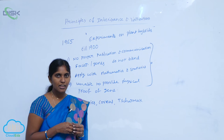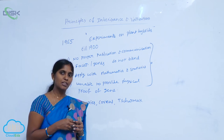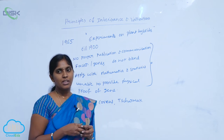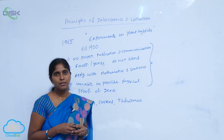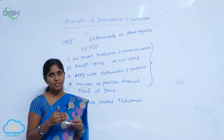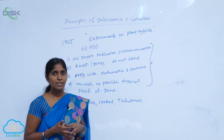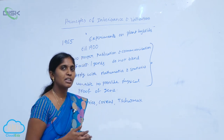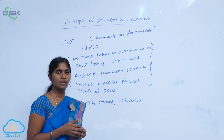Morgan conducted experiments on the fruit fly, Drosophila. The Drosophila is a fruit fly that lives on banana fruit, easily propagates, gives progeny readily, and multiplies easily. Based on these advantageous characteristics, it was chosen to study the chromosomal theory of inheritance.